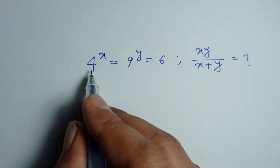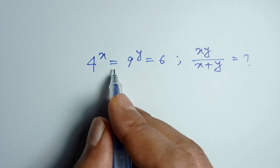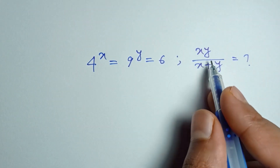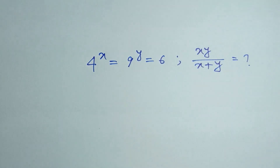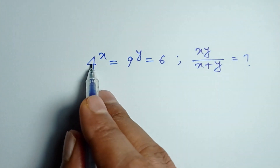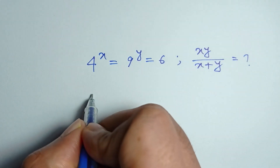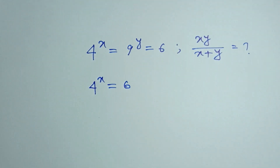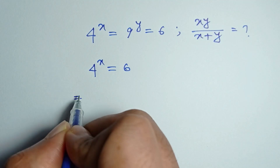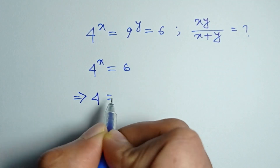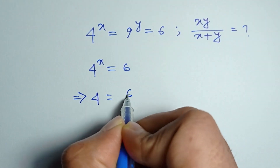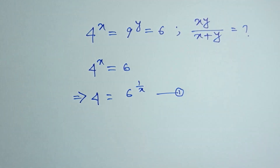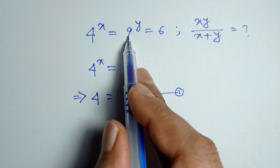Hi everyone. We have given: 4 to the power x is equal to 9 to the power y is equal to 6. We have to find the value of xy divided by x plus y. From here we can write 4 to the power x is equal to 6, so 4 is equal to 6 to the power 1 by x — equation number 1.